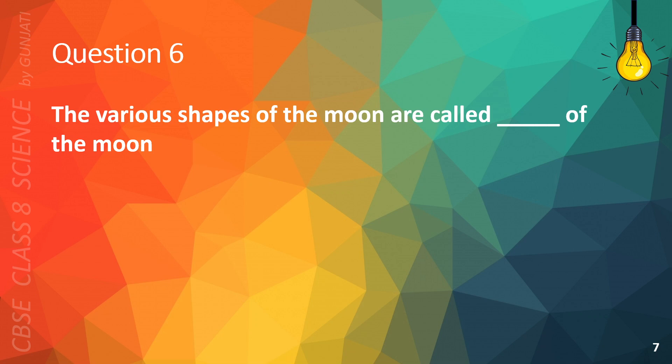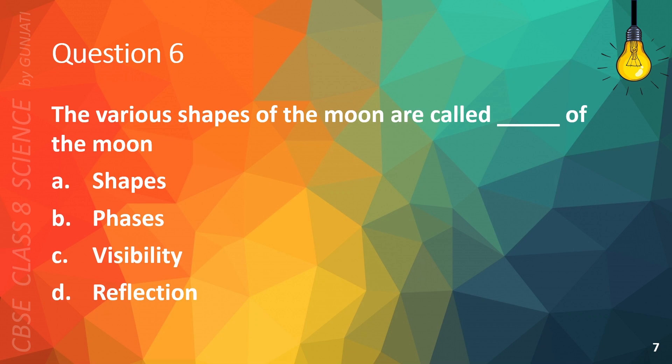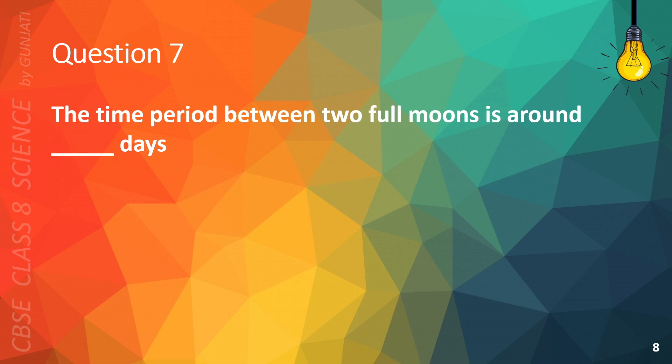Question 6. The various shapes of the Moon are called blank of the Moon. A. Shapes, B. Phases, C. Visibility, or D. Reflection. The correct answer is B. Phases.